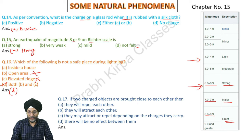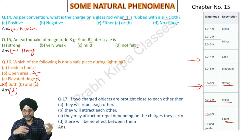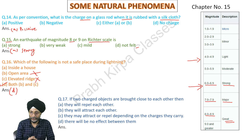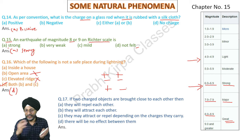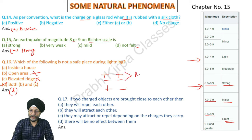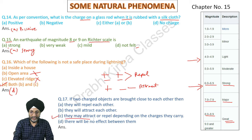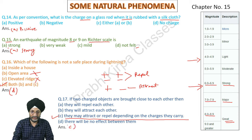If two charged objects are brought close to each other, what will happen? We have not been told whether the charged objects carry the same charge or different charges. They may repel each other or attract each other depending on the charges they carry. So our answer is C — they may attract or repel depending on the charges they carry.